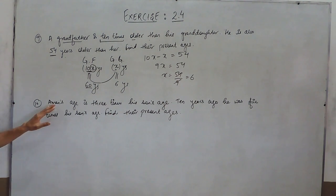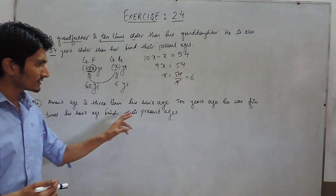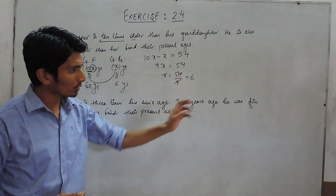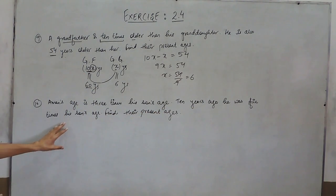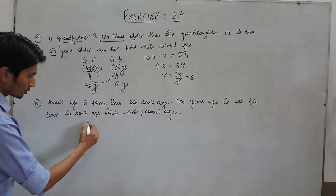In question number 10, Amman's age is 3 times his son's age. 10 years ago, he was 5 times his son's age. Find their present age.